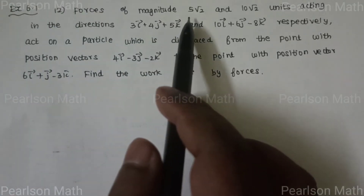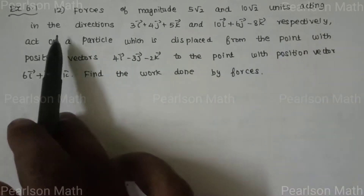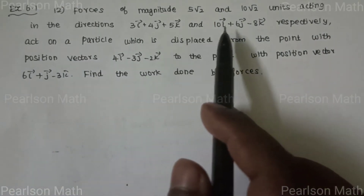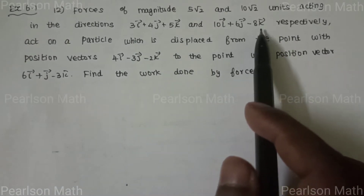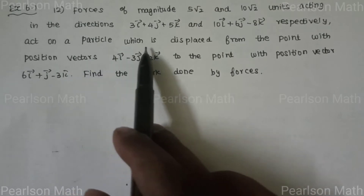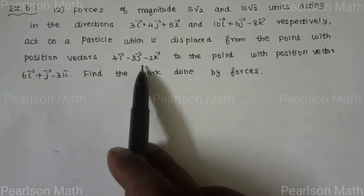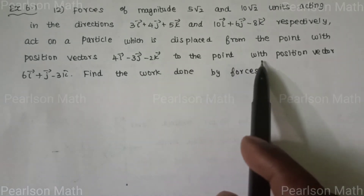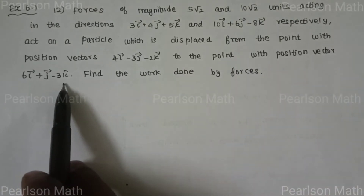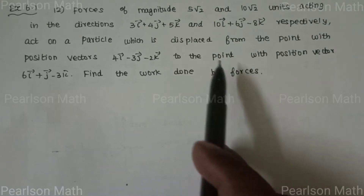Exercise 6.1 - forces of magnitude 5√2 and 10√2 units are in the direction 3i + 4j + 5k and 10i + 6j - 8k respectively, and act on a particle displaced from the point with position vector 4i - 3j - 2k to the point with position vector 6i + j - 3k. Find the work done by the forces.